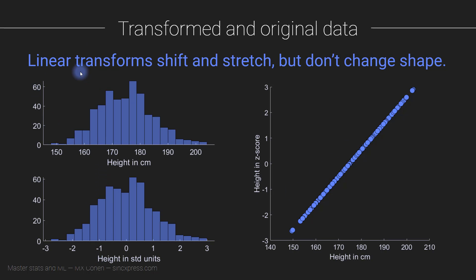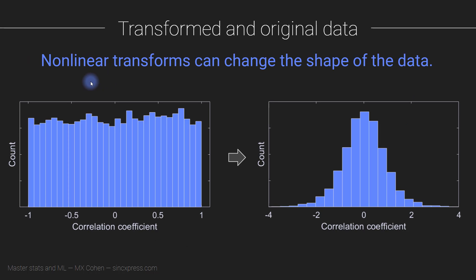So this is linear transformations. We also have a category of transformations called nonlinear transformations. And this is where we actually do change the shape of the data. So we really are changing the relationships between the different data points. We might start out with a histogram that looks like this to a histogram that looks like this. So now the relationships between individual data points has changed.